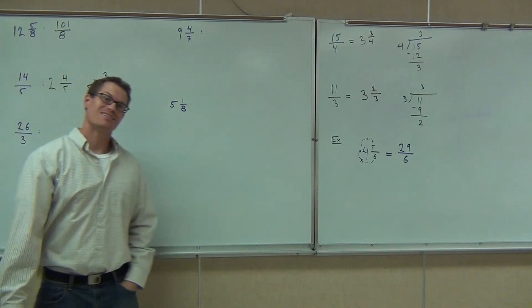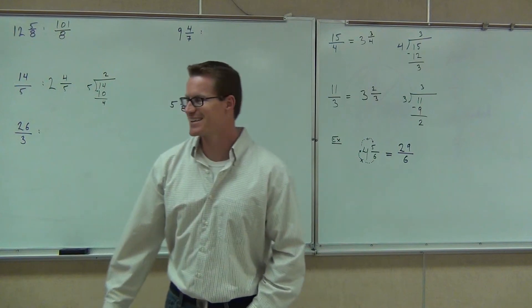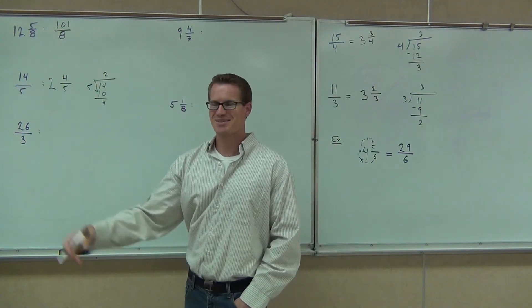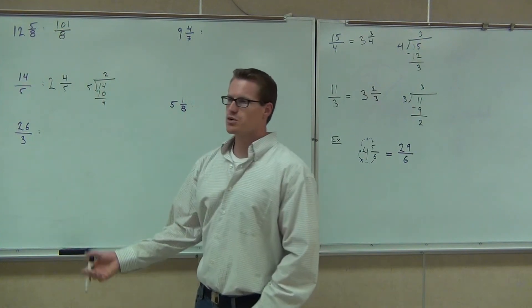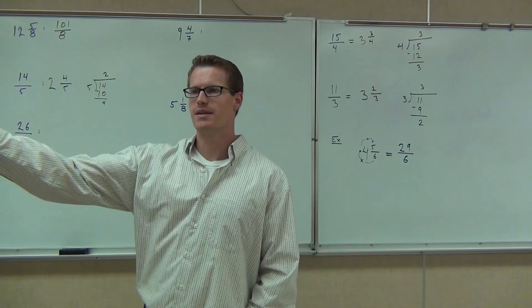I see kind of some zoned out eyes out there, just checking. Okay, yeah, it's definitely 2 and 4 fifths. We take our whole number first and then we write our fraction part after that.